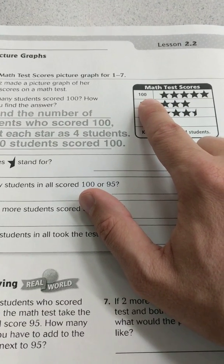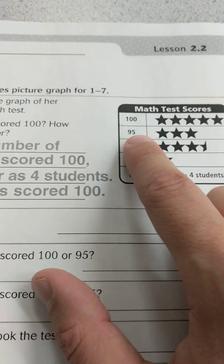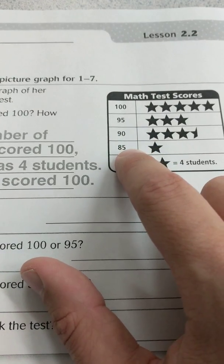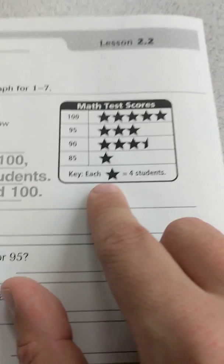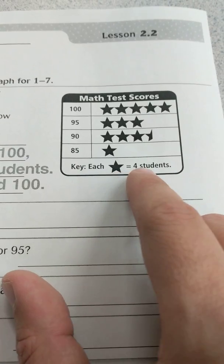And we have one of the scores is 100, then we have 95, 90, 85, and then down here at the key it says each star equals 4 students.